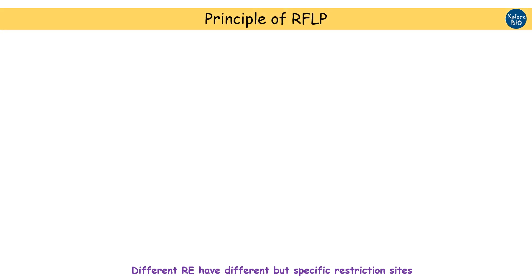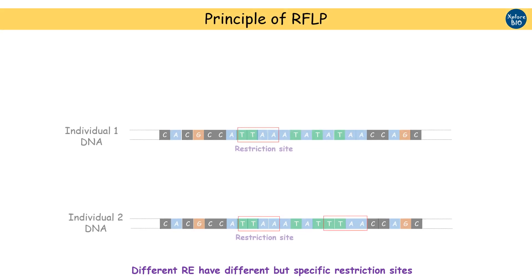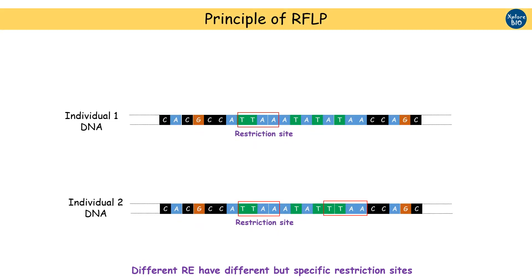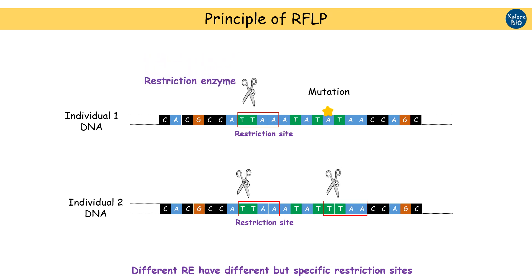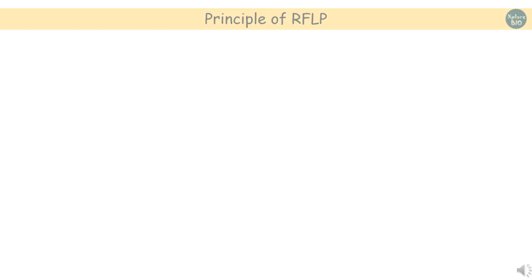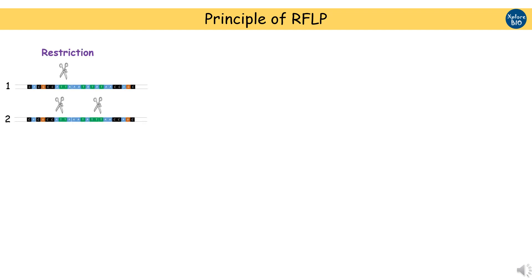The principle of RFLP is based upon restriction enzymes. Consider two individuals and their DNA. The restriction site of the restriction enzyme is shown as TTAA in the box. There is a variation of a single base A — a mutation in one base — in one individual. Thus individual 1 has only one restriction site, but individual 2 has two restriction sites. When cleaved with a specific restriction enzyme that recognizes the TTAA site, restriction fragments of DNA are generated.